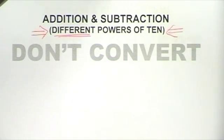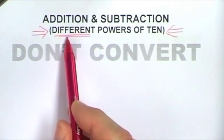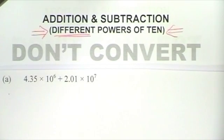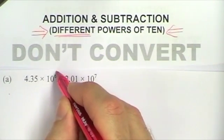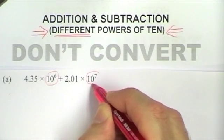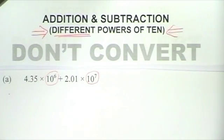I'm now going to look at addition and subtraction of standard form numbers with different powers of 10. In this addition, the two numbers in standard form have different powers of 10 — one is times 10 to the 6 and the other is times 10 to the 7. You cannot add or subtract numbers with different powers of 10, so you have to change one of the numbers so it has the same power of 10 as the other.